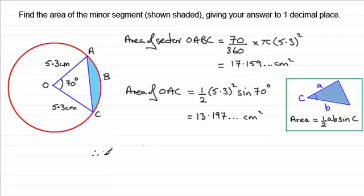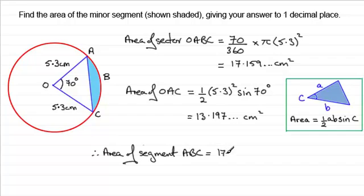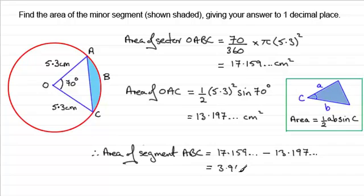Therefore, to find the area of the minor segment ABC, it's going to be equal to the area of the sector — which was 17.159 — subtract the area of the triangle — which was 13.197. Doing that subtraction gives 3.961, and rounding to one decimal place that's 3.9 centimeters squared (1dp).